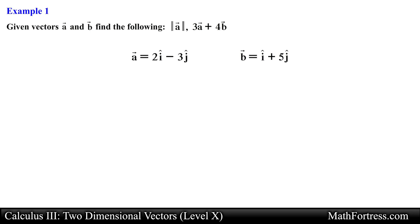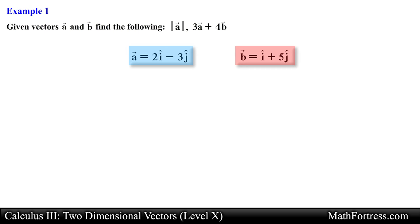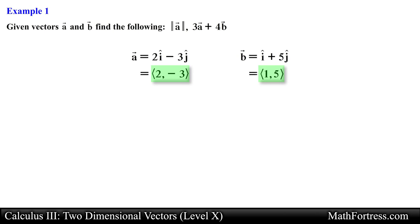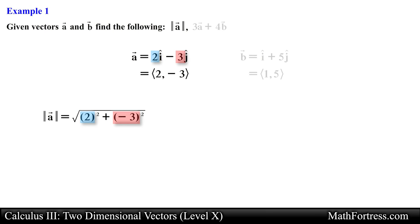Let's jump straight into the first example. Given vectors A and B, we are given them written in terms of the standard unit vectors I and J. Recall that we can use this and the component form of a vector interchangeably. With this in mind, let's find the magnitude of vector A — we square each of the vector's components (I hat and J hat), add the results, and take the square root, which simplifies to the square root of 13.